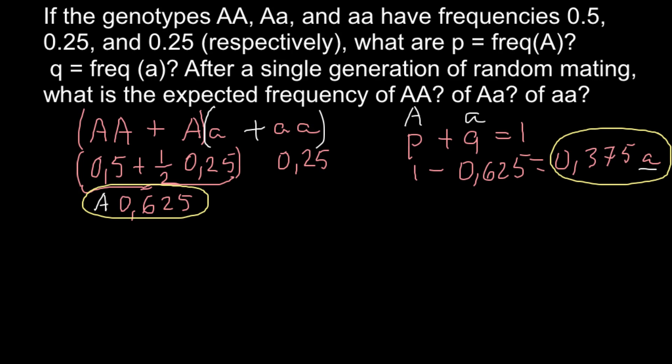Now we are ready to answer the second question. In order to find the expected frequency of the three genotypes in the following generation, we have to use the Hardy-Weinberg formula. The formula is p² plus 2pq plus q², and when we add up all three genotypes they should equal 1.